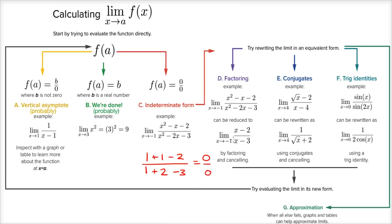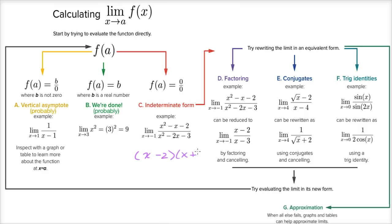Likely in a few weeks you'll learn another technique called L'Hôpital's Rule that involves calculus, but all of these techniques here can be done with algebra and trigonometry. So the first thing you might want to try, especially with a rational expression getting indeterminate form, is to try to factor it — see if you can simplify the expression. This expression can be factored as x minus two times x plus one over x minus three times x plus one.